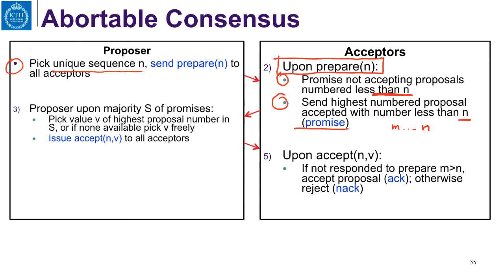The acceptors send this information to the proposer. The proposer, upon receiving a majority set S of promises, picks the value v of the highest proposal number in S. If none is available, it picks its own v freely. It then issues an accept message — that is, (n, v) — to all acceptors.